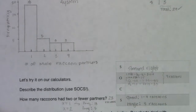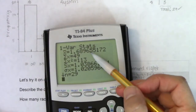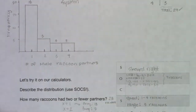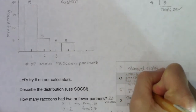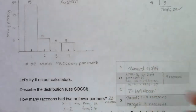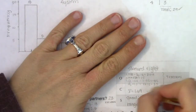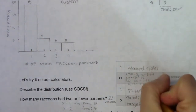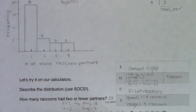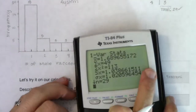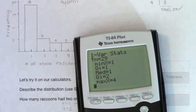For center, I've been using a lot of medians so let me try the mean. The sample mean is 1.69 raccoons. You could also just as easily report that the median was one raccoon — that's a totally acceptable answer.